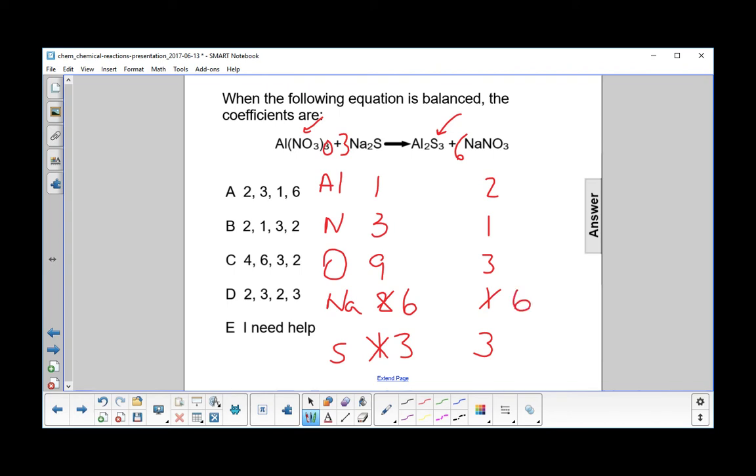We have, let's see, six nitrogens. So that goes over here. And we have 18 oxygens, right? Six times three is 18. So here's oxygen.